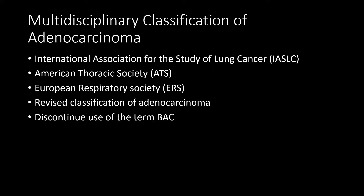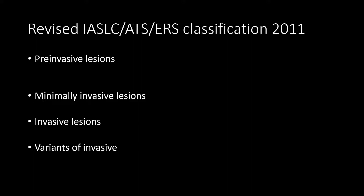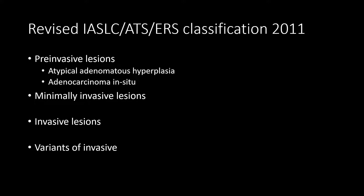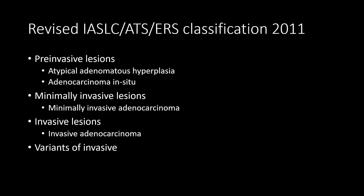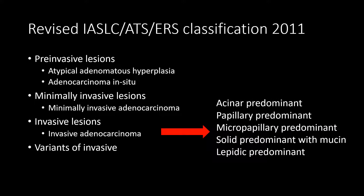To address this issue, the International Association for the Study of Lung Cancer, the American Thoracic Society, and the European Respiratory Society got together and revised the classification for adenocarcinoma in 2011, discontinuing the use of the term bronchoalveolar carcinoma. The four categories under the revised classification are: pre-invasive lesions (atypical adenomatous hyperplasia and adenocarcinoma in situ), minimally invasive adenocarcinoma, invasive pulmonary adenocarcinoma — subtyped by predominant invasive component as acinar, papillary, micropapillary, solid, or lepidic — and variants such as invasive mucinous adenocarcinoma.